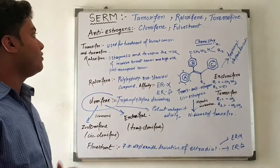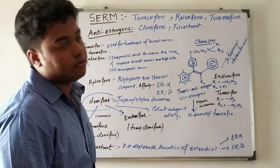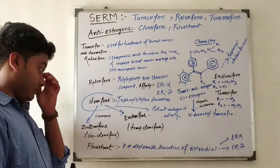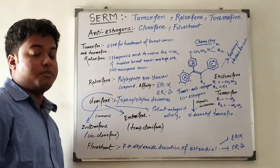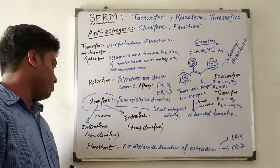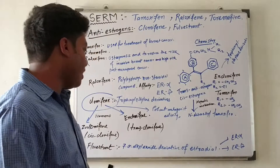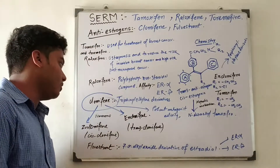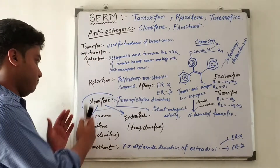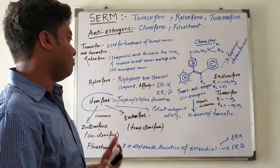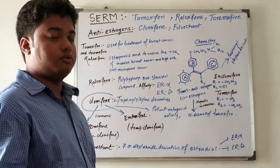We will also discuss anti-estrogens. Anti-estrogen compounds include clomiphene and fulvestrant. Clomiphene is a pure antagonist, and there are two isomers: zuclomiphene, which is cis-clomiphene, and enclomiphene, which is trans-clomiphene. These two isomers have different potencies and act on different estrogen receptors.